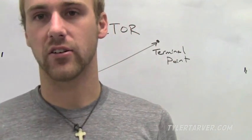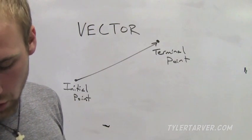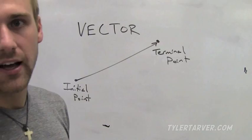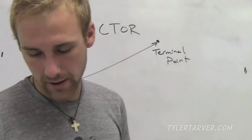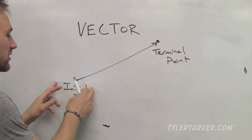Let me say that again as the official term: a vector is a quantity that has both length and direction. Now I've drawn a vector up here. The starting spot is called the initial point.